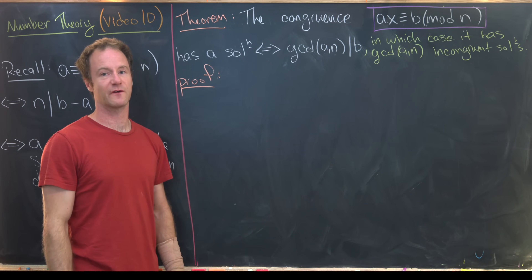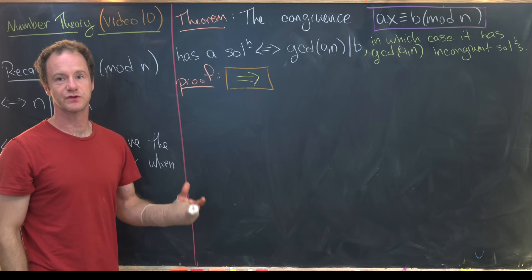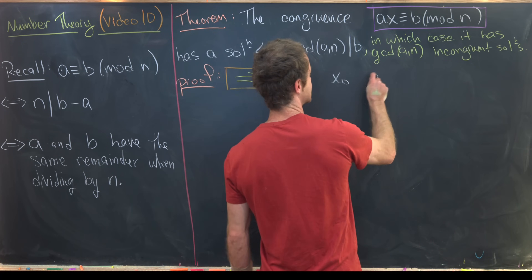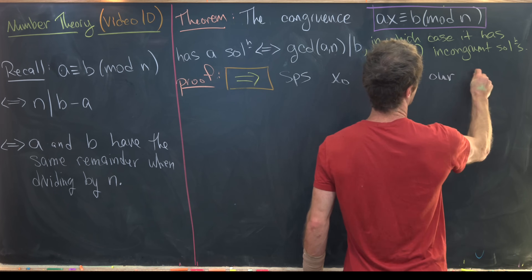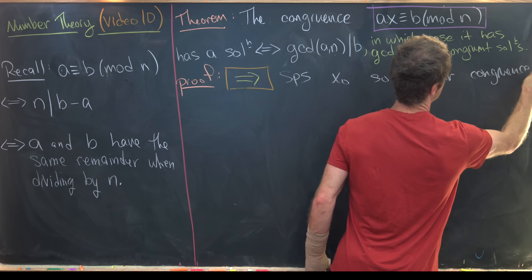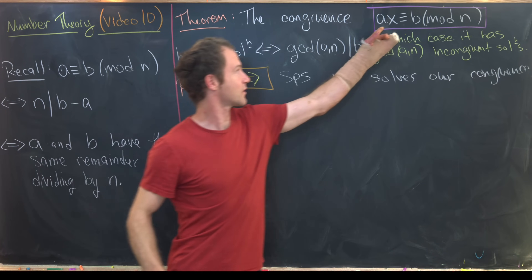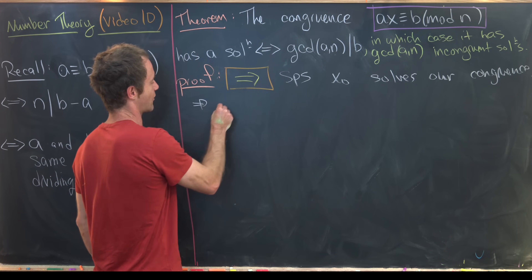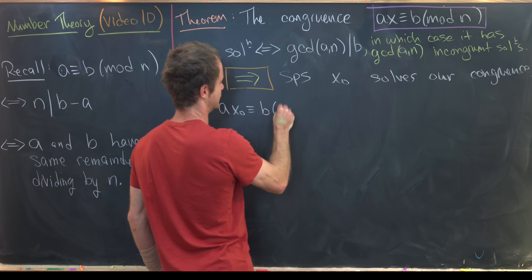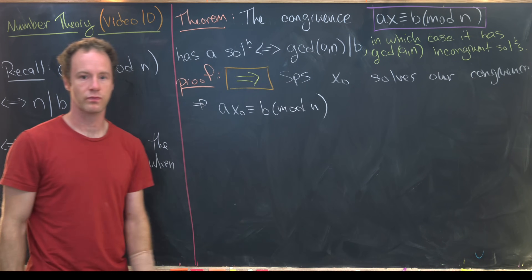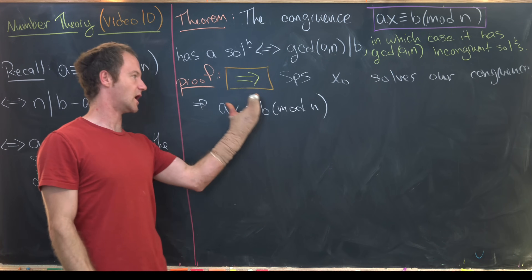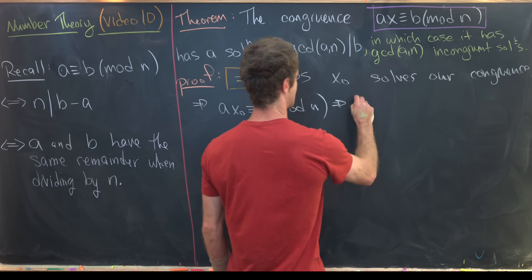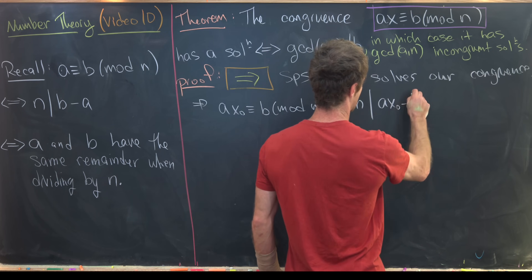Starting with the forward direction of the proof, we suppose that x₀ solves our congruence. There's a mind shift here: x is a variable, but x₀ is the solution. So we have ax₀ ≡ b mod n. From here, we want to move this congruence to an equation within the integers. We can say that n divides ax₀ minus b.